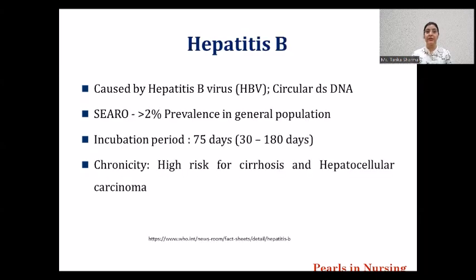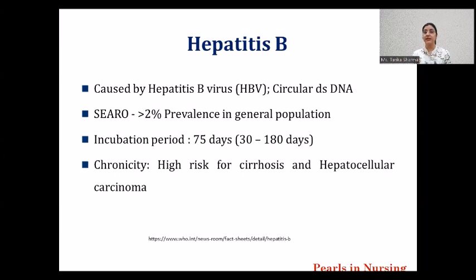Starting with the introduction. Hepatitis B is caused by Hepatitis B virus, which is known as HBV virus. It is a circular double-stranded DNA virus. You have to remember that all other viruses — Hepatitis A, Hepatitis C, D and E — are RNA viruses, and we have Hepatitis B which is a DNA virus.